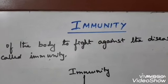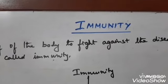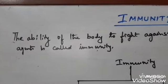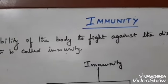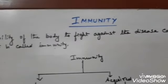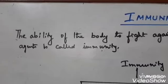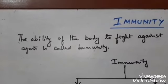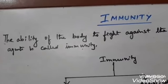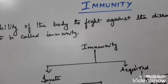First, let me define immunity. Immunity is the ability of the body — the host body — to fight against disease-causing pathogens or disease-causing agents. So immunity is the ability of the host to fight against the disease-causing agent.